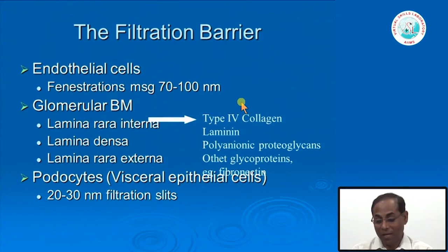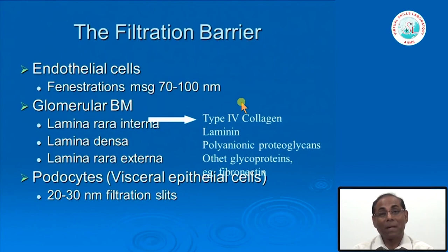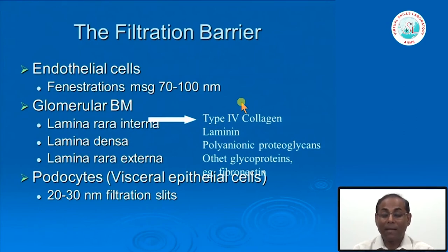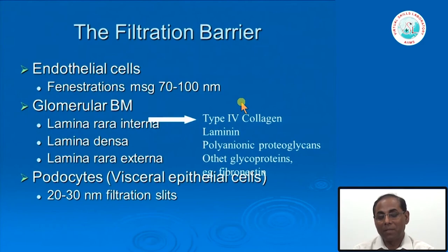The glomerular basement membrane contains type IV collagen as the fibrous protein, along with other extracellular matrix proteins that act as glue—most importantly laminin, polyanionic proteoglycans, and other glycoproteins. So the main fibrous protein is type IV collagen, combined with extracellular matrix proteins.